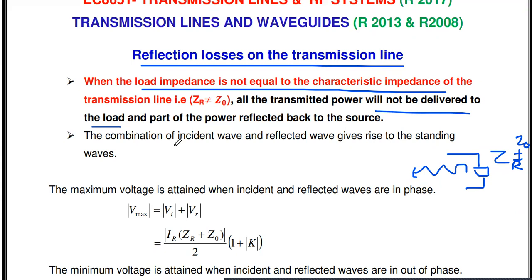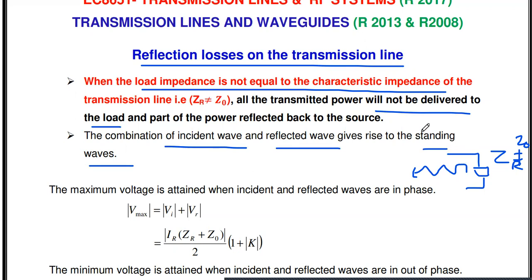The combination of the incident wave and the reflected wave gives rise to a standing wave. In a perfectly matched transmission line, there is no standing wave — only an incident wave, no reflected wave. The standing wave ratio for a matched line is one. If the line is not matched, we will get reflection, and because of reflection, we get reflection loss.